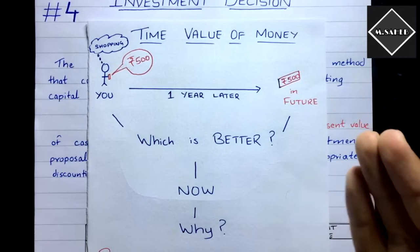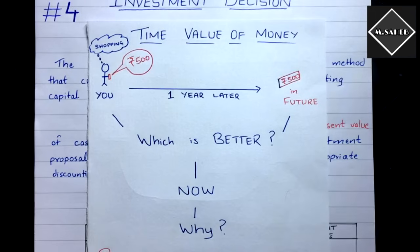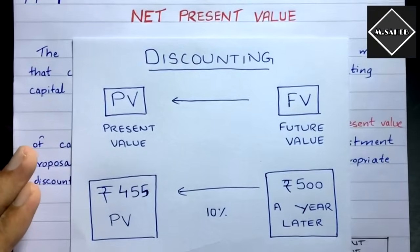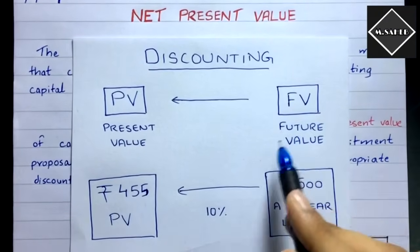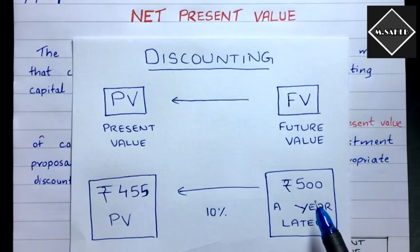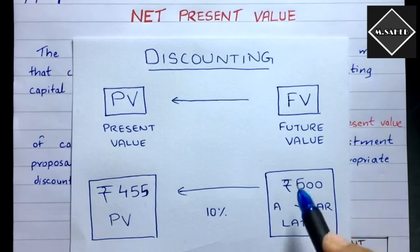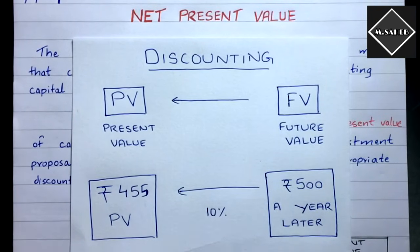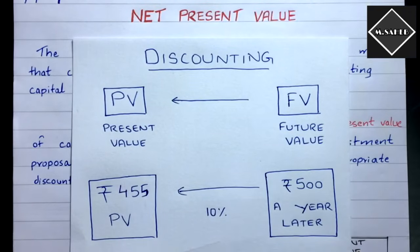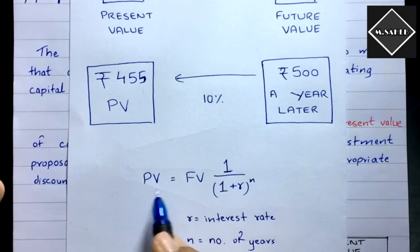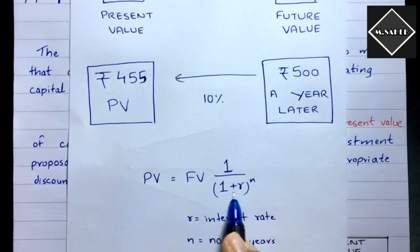Due to the time value of money, we discount our cash flows. Discounting is nothing but converting the future value into the present value. For example, if we are supposed to receive 500 rupees a year later, we want to know the value of that 500 rupees in today's terms. The present value comes out to 455 rupees, calculated using a discount factor and a rate which will be given in the question.